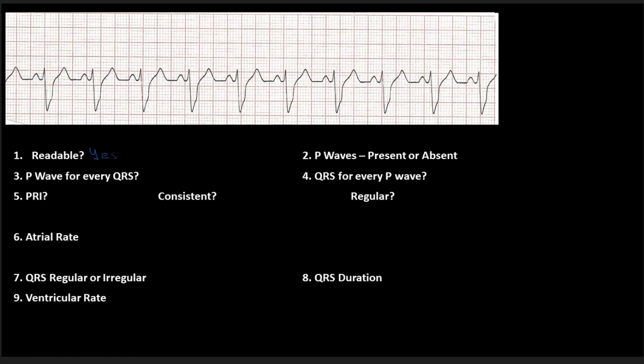Then I want to take a look at their P waves, are they present or absent? And again, I'm going to take a look and identify all my P waves. And I have P waves. So my P waves are present. Do I have a P wave for every QRS? Well, let's check that out. So here's a P wave, and here's a QRS. P wave and a QRS.